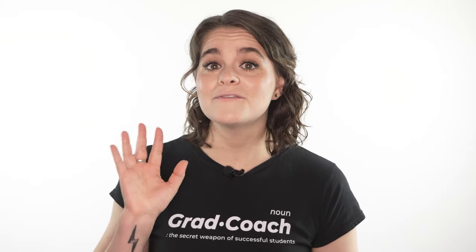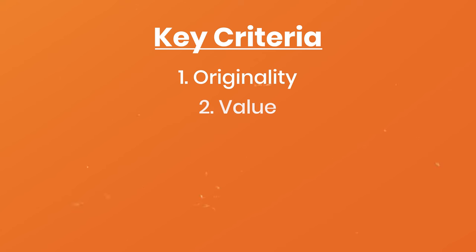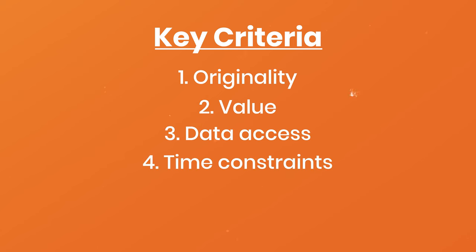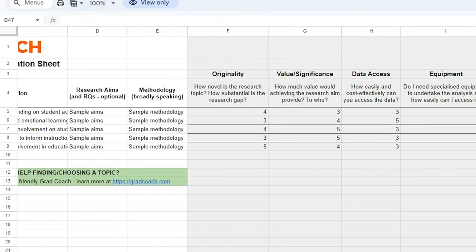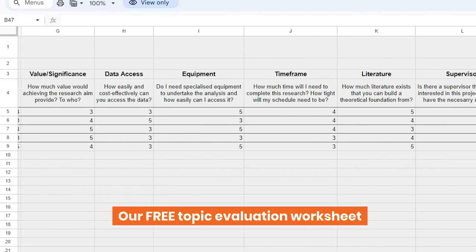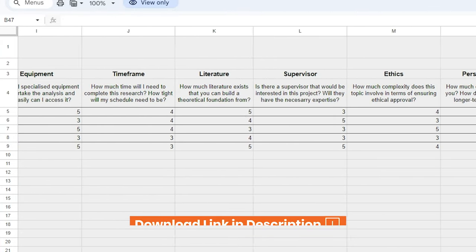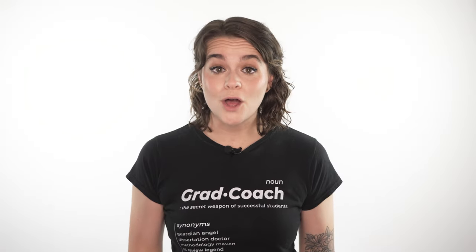We've covered quite a bit of ground, so let's quickly recap. The big five criteria against which you should evaluate your potential topic ideas are: the topic's originality or novelty, the value or significance of the proposed study, your access to data sets and equipment, the time constraints for your project, and the ethical complexity. Remember to grab a copy of our free topic evaluation worksheet, which includes a few more criteria to consider. Once you've populated all the fields, you can add up the numbers and quickly identify which topics are the most attractive overall.